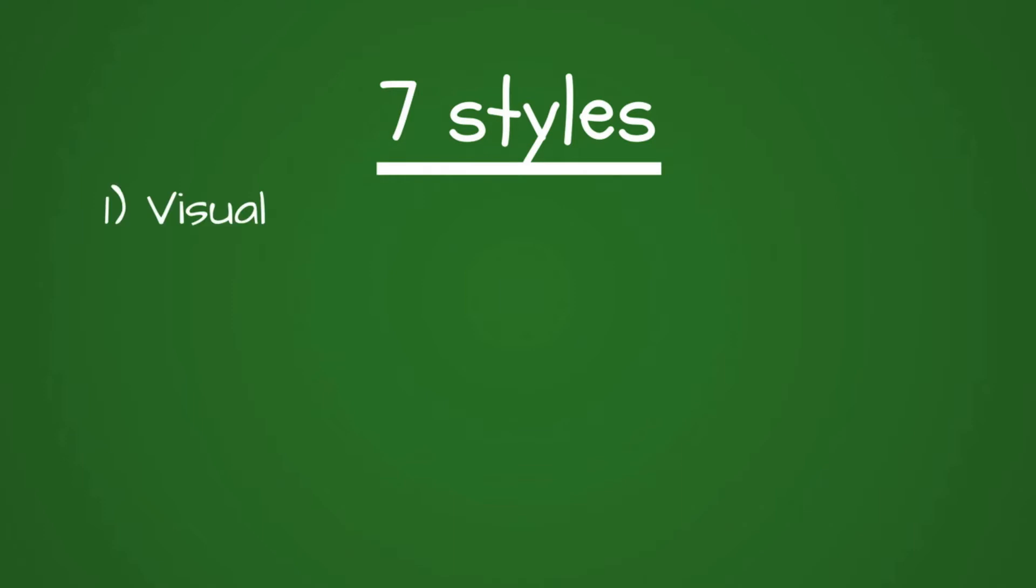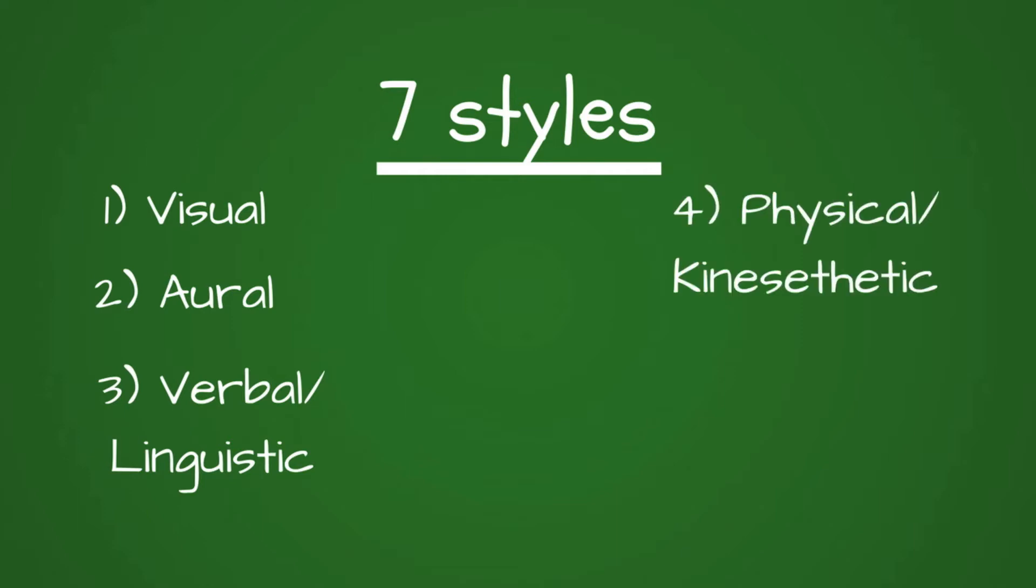Visual learners prefer to learn through pictures and images. Oral learners do best when they connect ideas to sounds and music. Verbal or linguistic learners excel when material is presented in words. Physical or kinesthetic learners learn best by moving their bodies and touching things. Logical learners like things to be presented in a systematic, logical way. Social learners prefer to learn in groups while solitary learners do better when they work alone.